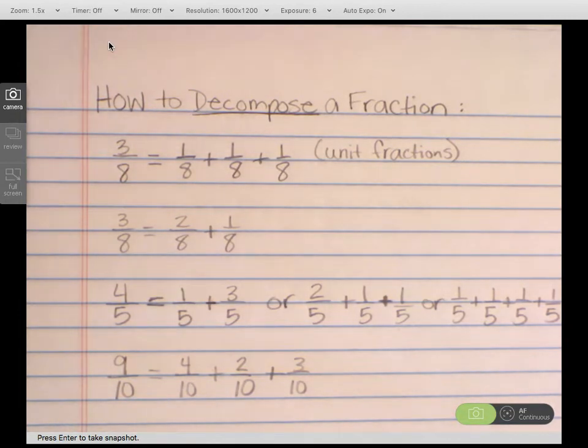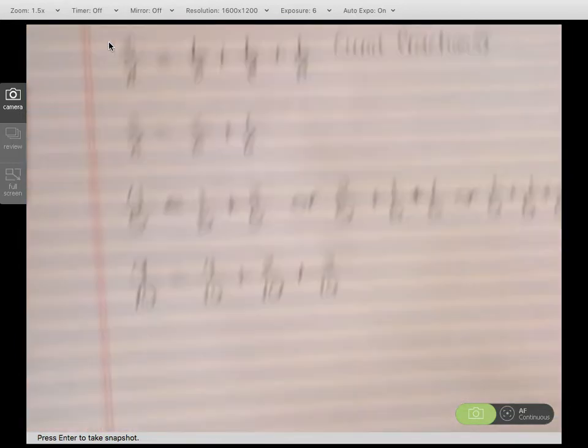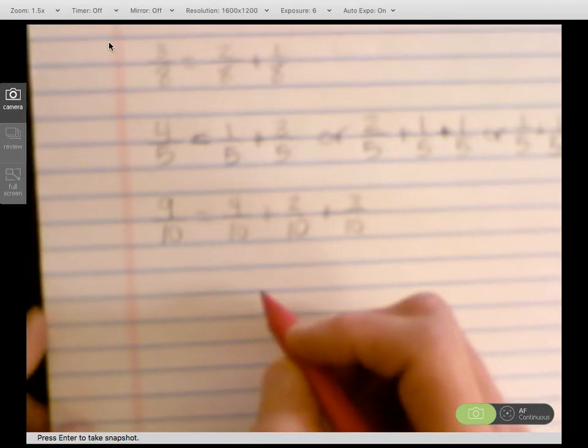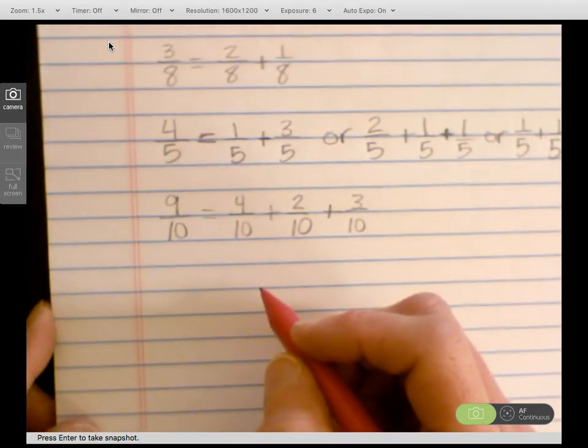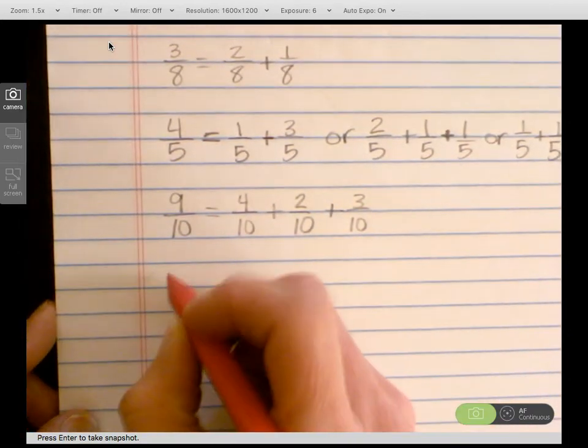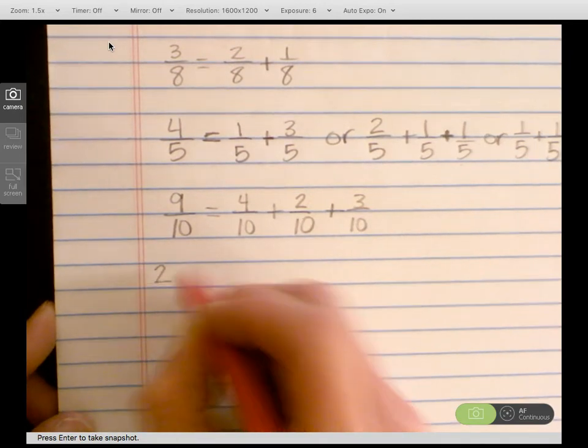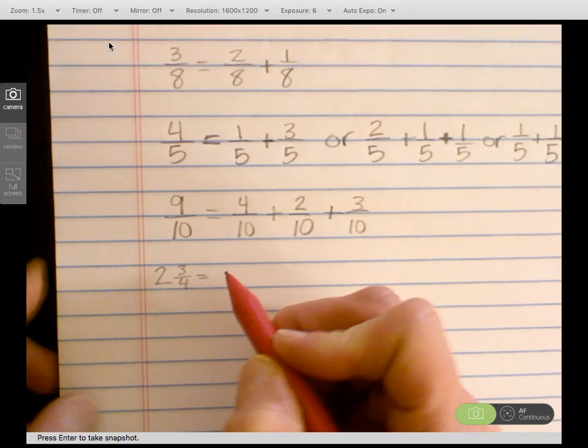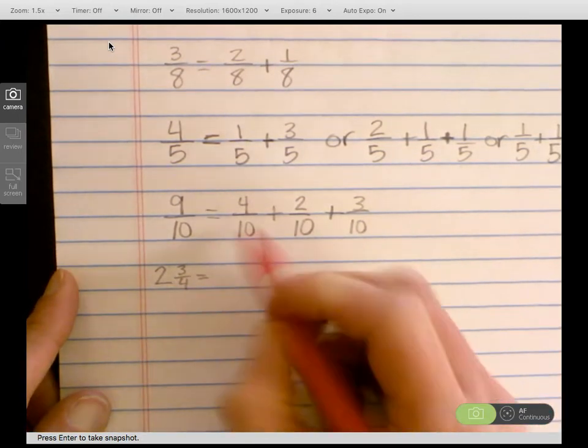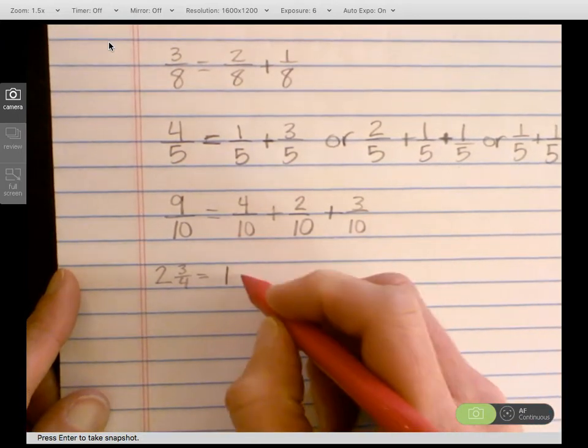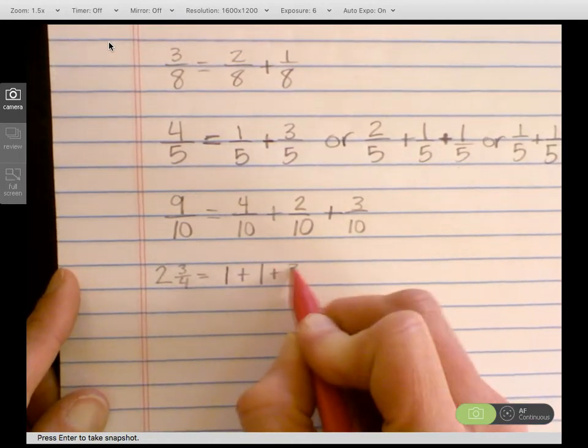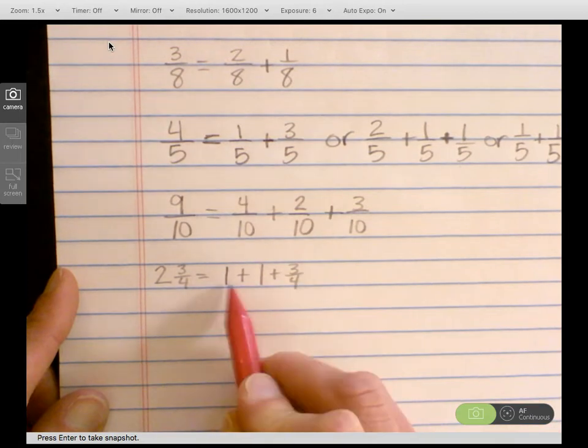Let's look at a mixed number. A mixed number is a whole number and a fraction that are put together. And we could look at the example 2 and 3 fourths. Well, I could break that apart with 1 whole plus 1 whole plus 3 fourths. So here's my whole number.